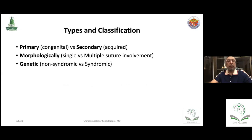We now go back to important terminology. We classify craniosynostosis as the classic congenital — called primary — or secondary, also called acquired. We classify again by morphology: single or multiple sutures. Then we classify by genetics, which has become increasingly important over the last ten years, to know whether the case is syndromic or non-syndromic.